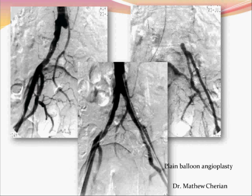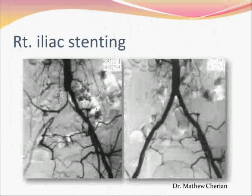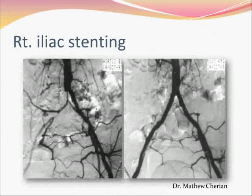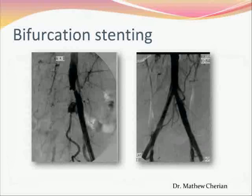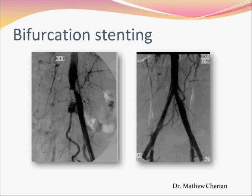Here are some examples of chronic occlusions of the iliac artery treated by plain balloon angioplasty — things we used to do several years before. Today we would treat them all by primary stenting. Here are examples where we have stented chronic occlusions, including bilateral stenting for a critical stenosis of the ostium on the left side and total occlusion of the common iliac artery on the right side.